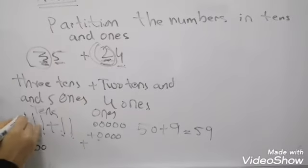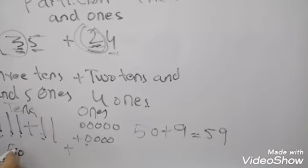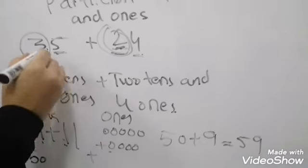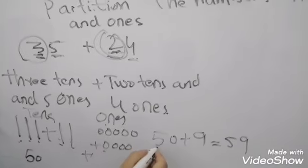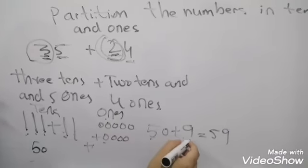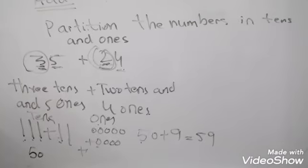First find the tens. 10, 20, 30. 10, 20. Total 50. And plus ones, 5 ones and 4 ones. So 50 plus 9 is equal to 59.